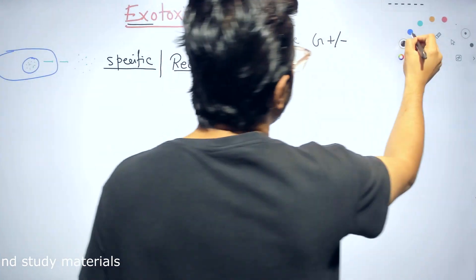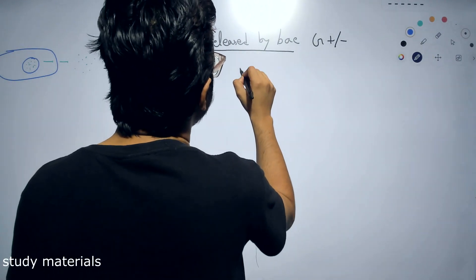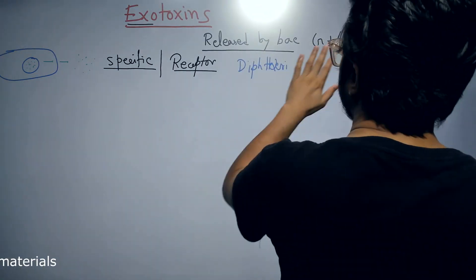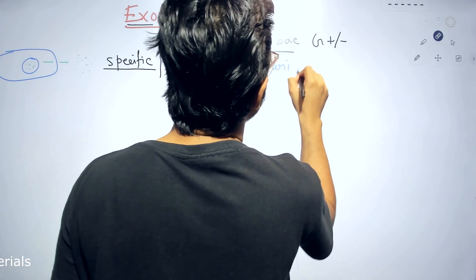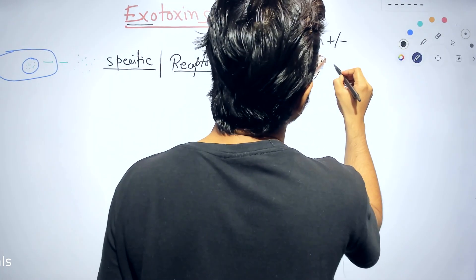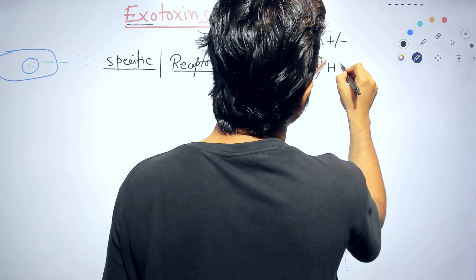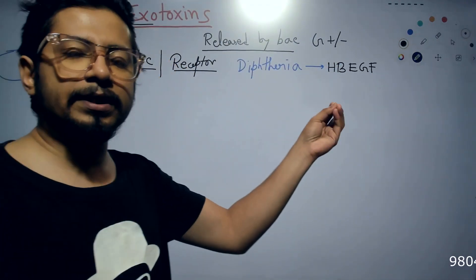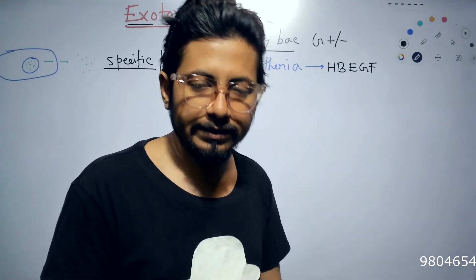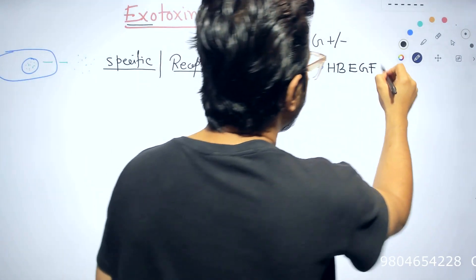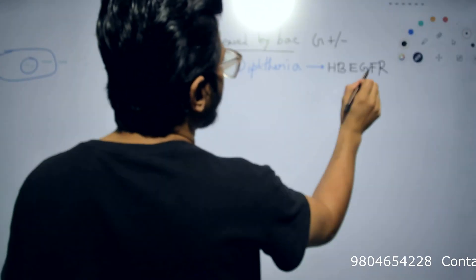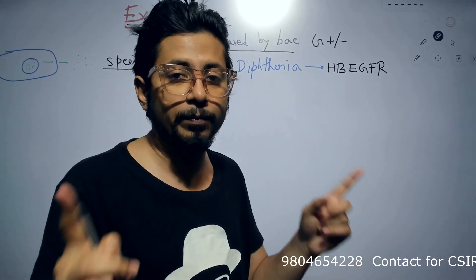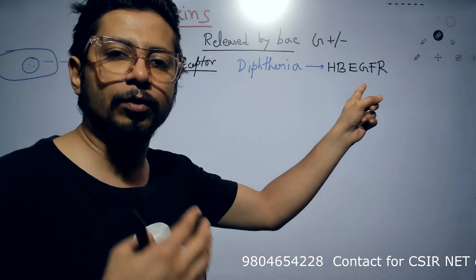Lock-and-key binding. For example, if I give you the example of diphtheria toxin, the receptor the diphtheria toxin binds to is the heparin binding epidermal growth factor receptor, HBEGFR. So a particular receptor that is present on the surface of our eukaryotic cell, this is the receptor where the diphtheria toxin binds to. And this binding is very specific. Diphtheria toxin will not bind to any other cell surface, only to the cell surface with heparin binding epidermal growth factor receptor.